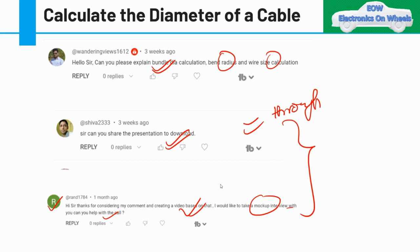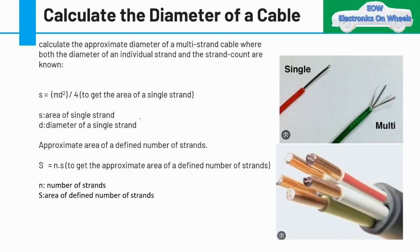Moving to today's topic: calculate the approximate diameter of a multi-strand cable. First, we'll understand the types of cable we have. One type is single strand — a single wire — and the other is multi-strand, which has multiple wires. In a wiring harness bundle you'll mostly encounter multi-strand situations, though you may also come across single-strand cases such as grounding wires.